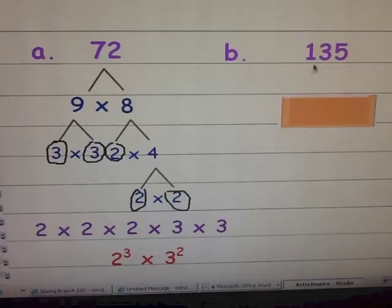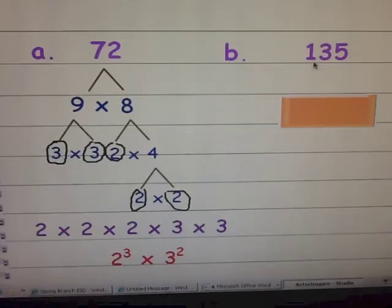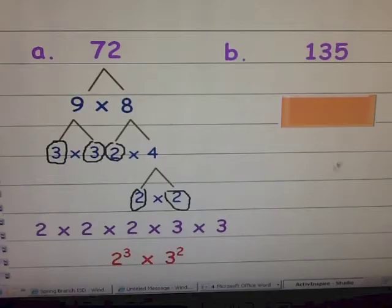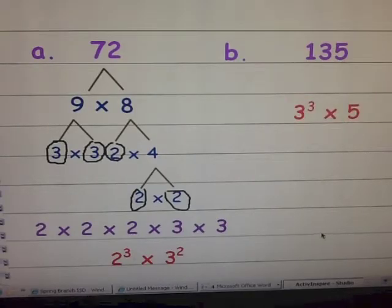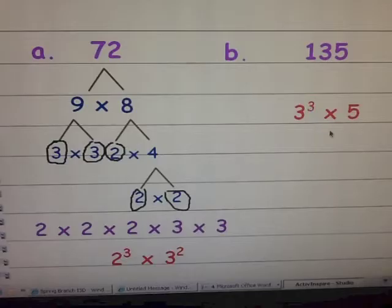Go ahead and pause the video. Find the prime factorization of 135, and then write your answer using exponents if possible. Once you're done, come back and we'll check your answer. The prime factorization of 135 is three cubed times five — three times three times three times five — or three to the third power times five. This is how you would write your answer using exponents.